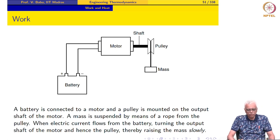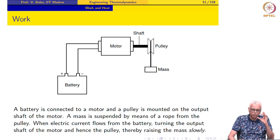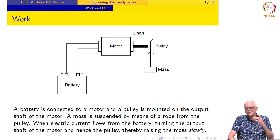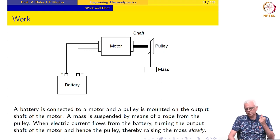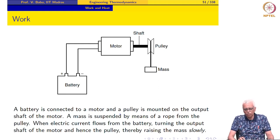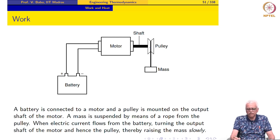Here we bring out a subtle aspect about thermodynamic work. The most important idea is that work is an interaction of the system with the surroundings — unless there is an interaction, there cannot be a work interaction. We are looking at a situation where we have a battery connected to a motor, and the output shaft of the motor turns a pulley which is used to raise a mass.